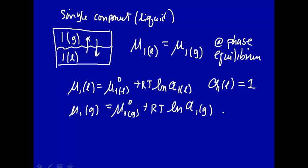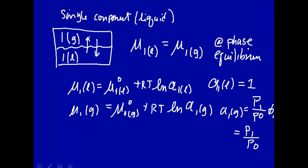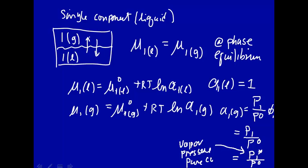And the activity of component one in the gas phase equals the pressure in the gas phase divided by the standard state pressure, times some fugacity constant for the first component. Assuming an ideal solution, this is simply the pressure of component one divided by P0 — that's what the activity is. We'll put a star notation to indicate that we're dealing with a single pure component, so this will be the vapor pressure of the pure component above the solution. That star means the vapor pressure of the pure component.